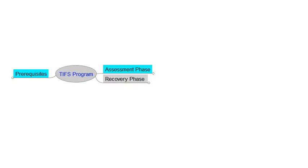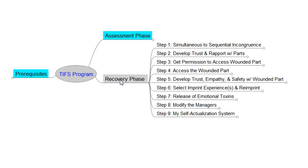Welcome to part three of the TIFS course overview. In this video we're going to explore the recovery phase of the program. The recovery phase has nine steps. The first step is to move from simultaneous incongruence to sequential incongruence.